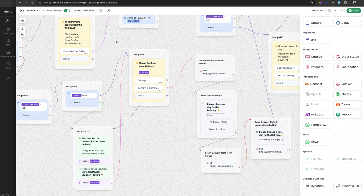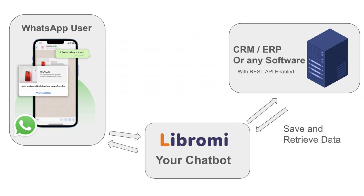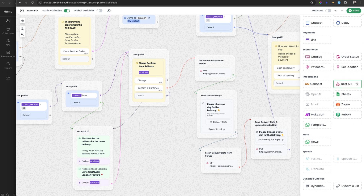If you are already building a chatbot using Libromy, you already know how to build a basic chatbot. But in some cases you might need to communicate with a third-party server in order to push the data you collected from the chatbot to a third-party server. Also you may need to fetch data from the server and push it to the user through WhatsApp. To do that you can use this REST API module.